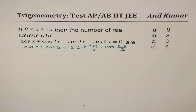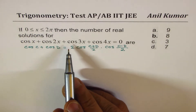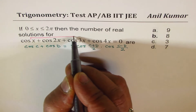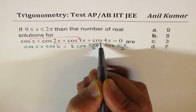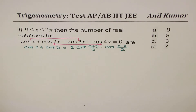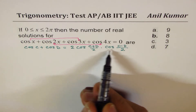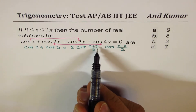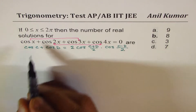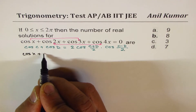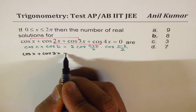We'll apply this identity to solve the question. What you can do here is combine the odd terms — cos x and cos 3x — and the even terms — cos 2x and cos 4x — to simplify into product form. Once you have the factored form, we can figure out the zeros. So let's rewrite: cos x + cos 3x + cos 2x + cos 4x = 0.